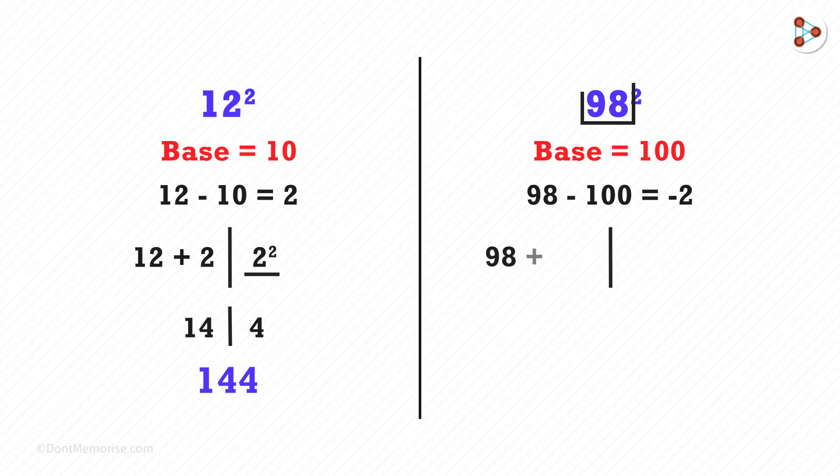So on the left side, we have 98 plus negative 2. On the right side, we will have two digits as the base has two zeros. On the right, we will find the square of the difference, that is negative 2 squared. On the left,